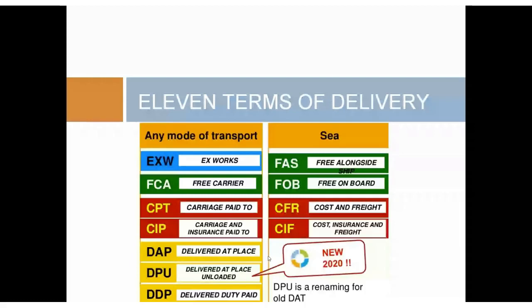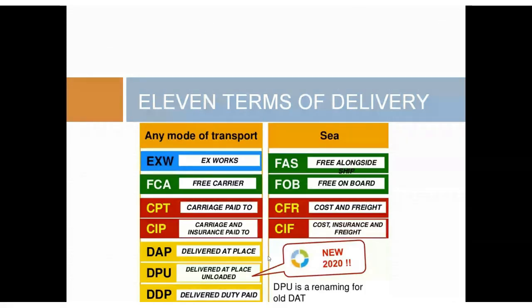Same as the last time — same as 2010. You have 11 terms of delivery. The ones on the left are for any mode of transport, and the four on the right are for inland waterways and sea. The only difference between 2010 and 2020: DPU is the new one, and DAT is gone. So DPU takes the place of DAT. There are more changes than just that one, and we're going to look through them in a moment.